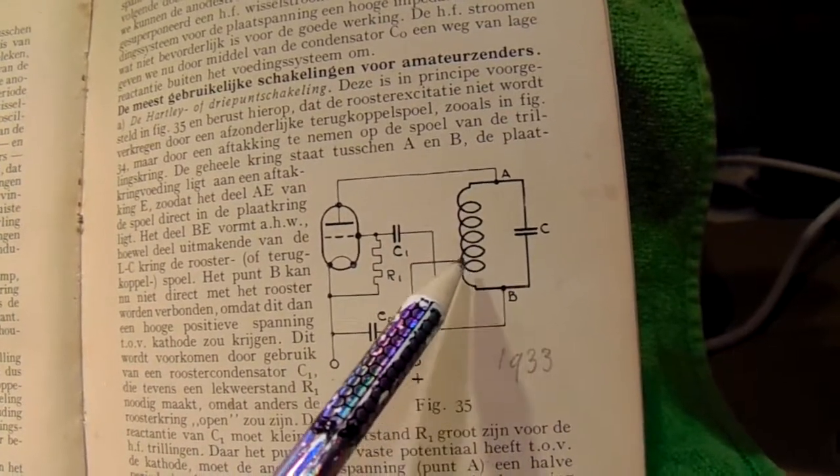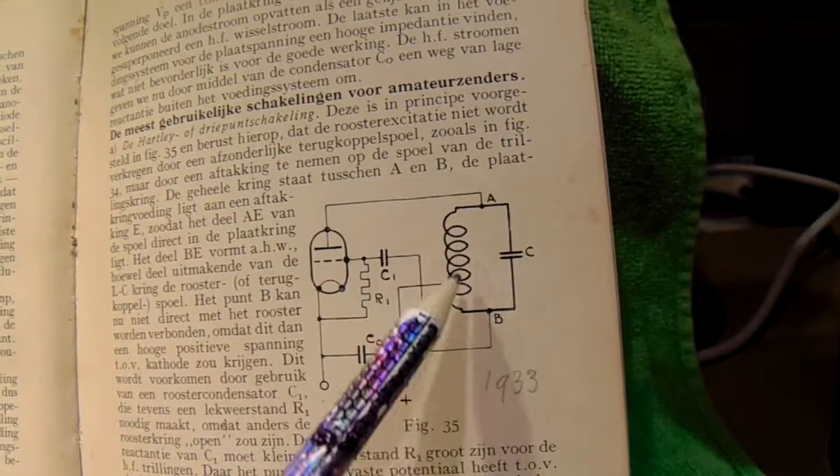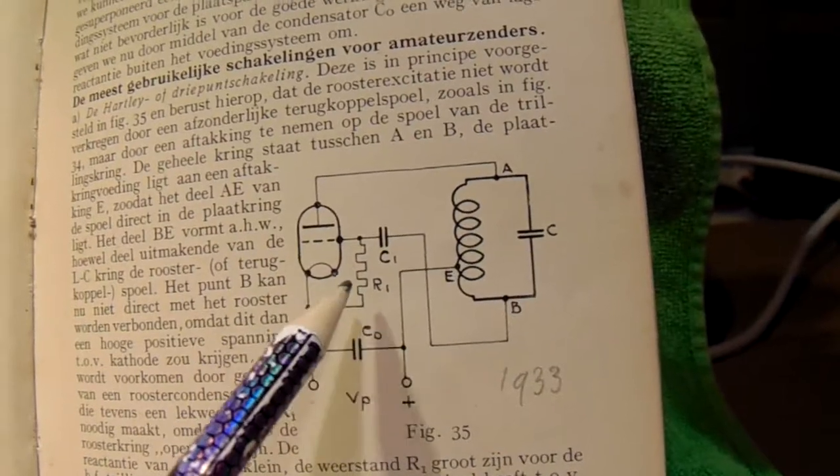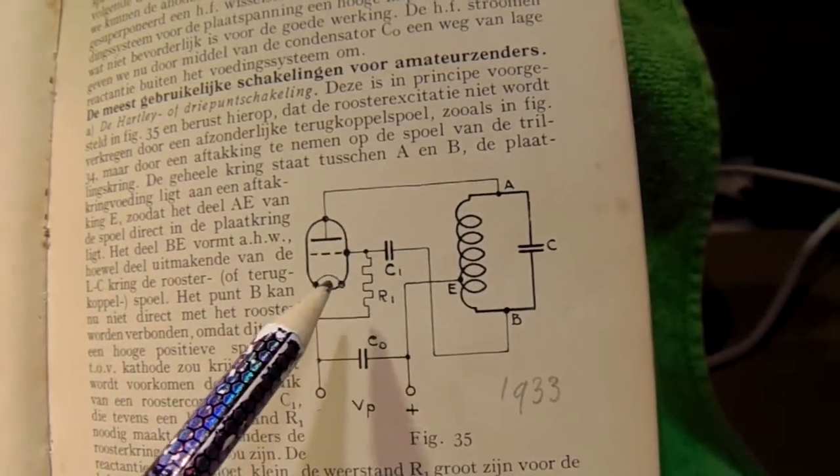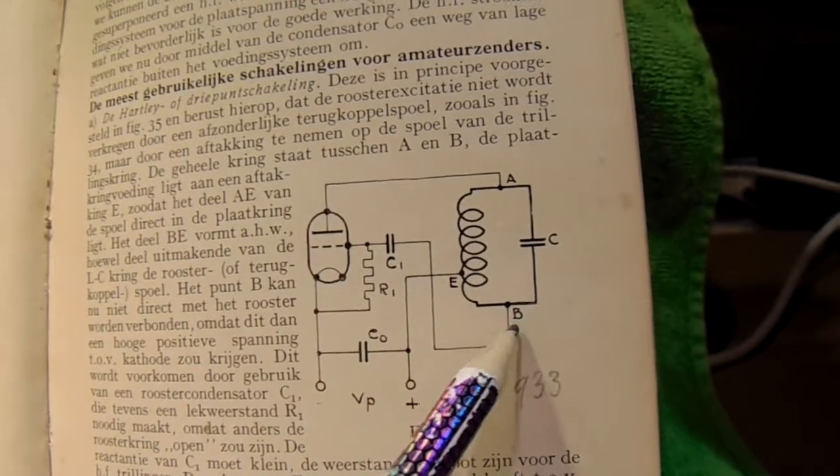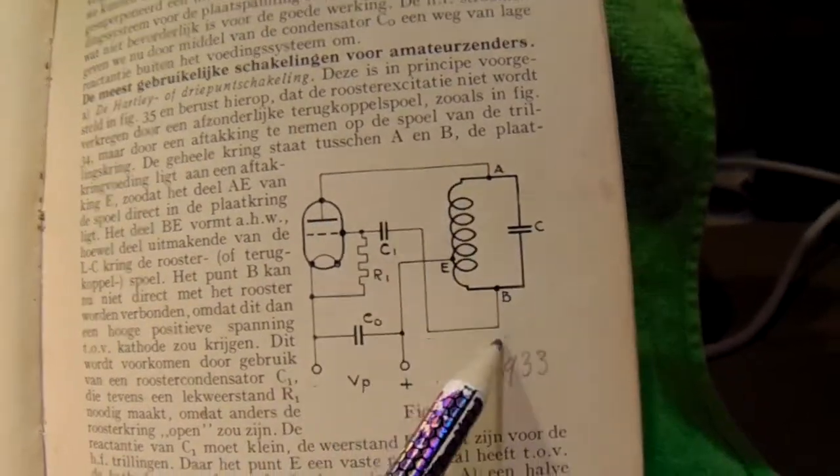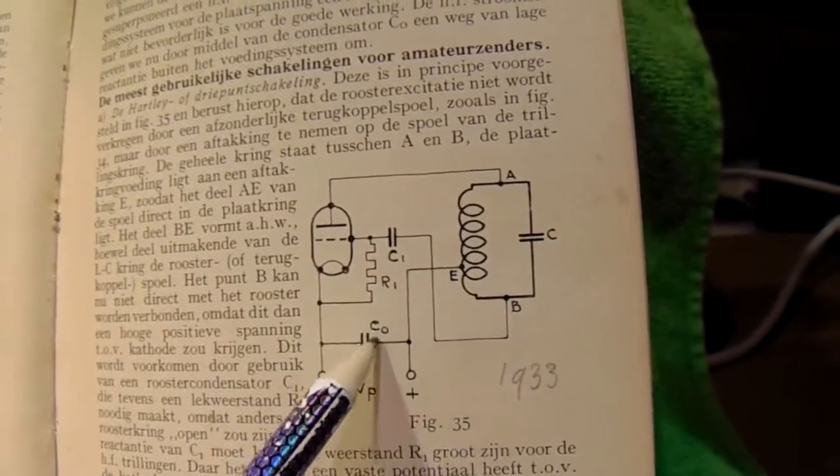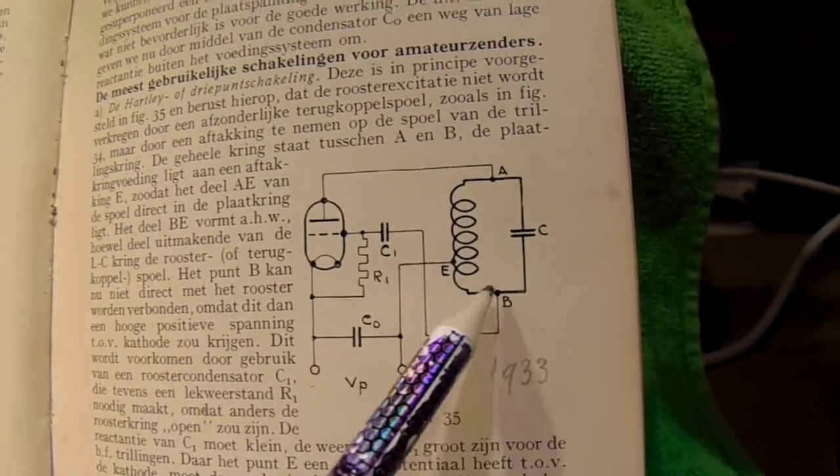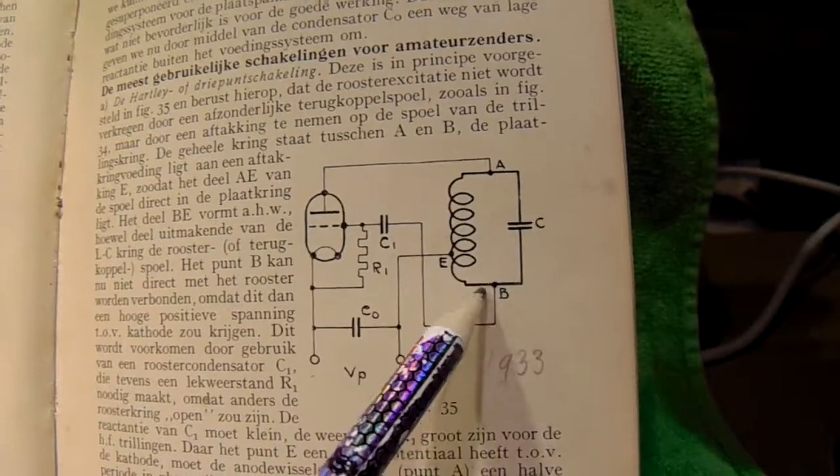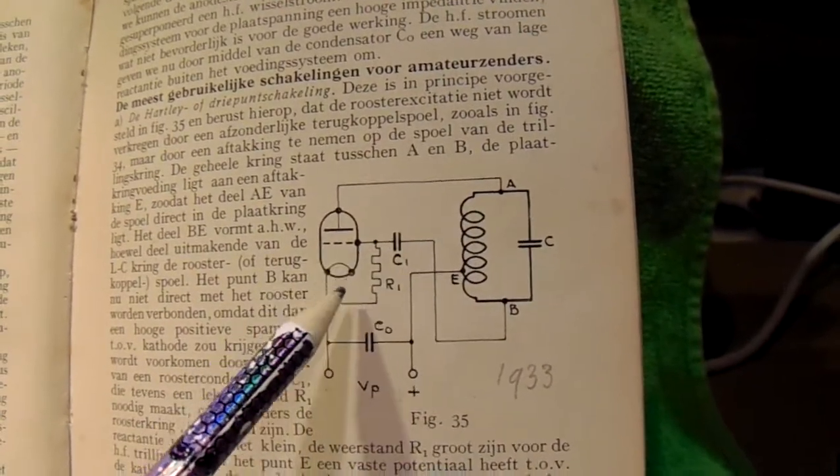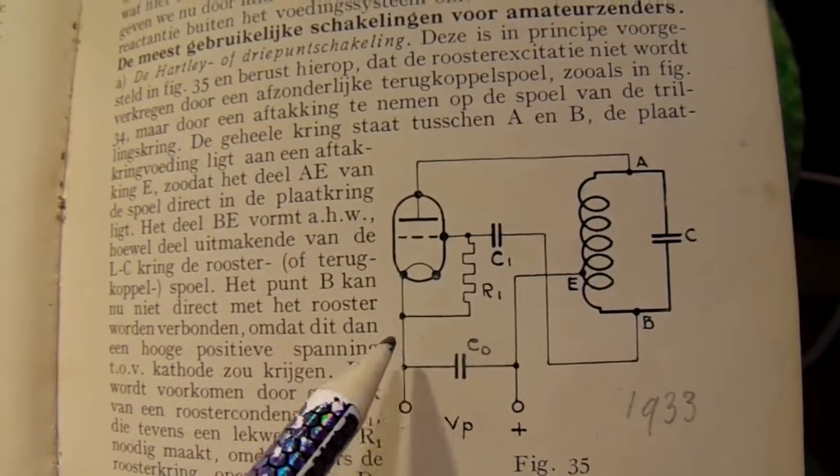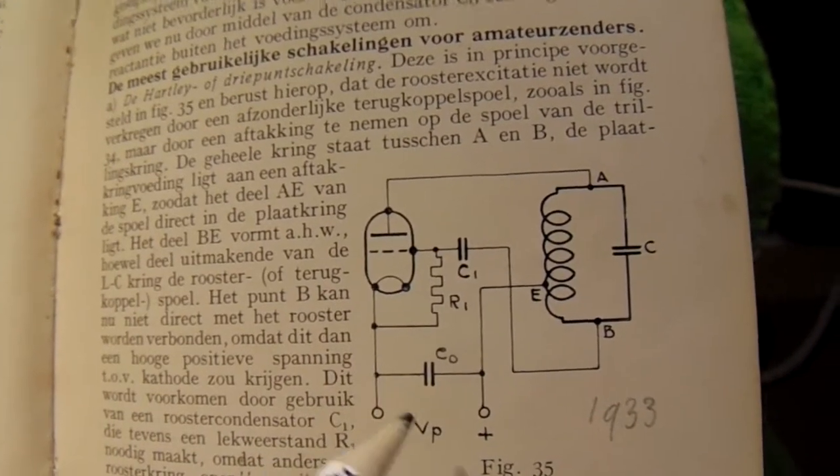But at the same time in this coil we have here a tapped part of the coil and that has another phase and that part of the frequency dependent element is sent back. The outer side from the coil is sent back. But the coil is tapped here. And that means that a part of the signal here is in another phase and is sent back to the grid. And that has an effect that the whole circuit starts to oscillate.